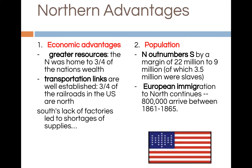Some Northern advantages included the economic advantage — the North had a lot of resources that the South did not have, and three-fourths of the nation's wealth resided in the Northern states. The North also had three-quarters of the railroads, so transportation was better in the North. The South was at a disadvantage because they relied so heavily on specific crops and never embraced the factory system, which eventually led to a shortage of supplies for the Confederacy. The North also outnumbered the South by a margin of 22 million to 9 million, of which 3.5 million were slaves, and approximately 800,000 European immigrants arrived in the North during the war.